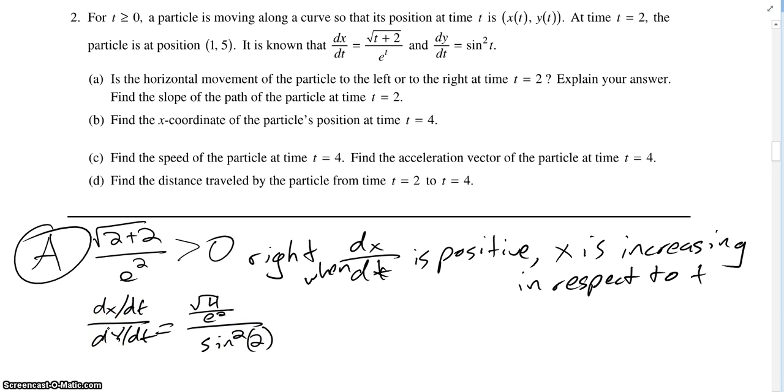Alright, so actually this is flipped because we're looking for dy/dx, not dx/dy. I don't know why I did that. But it's really going to be sine squared of 2 over square root of 4 over e to the square. So this is actually equal to about 0.3 something. But the value we're looking for is actually dy/dt over, so I'd cross that out on the exam, dx/dt, which is about equal to 3.055. So that would be the slope of the path of the particle at time t equals 2.